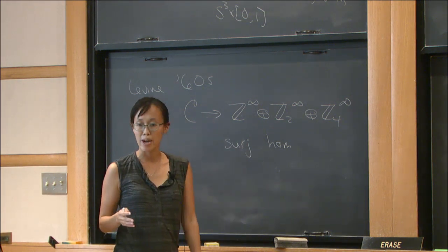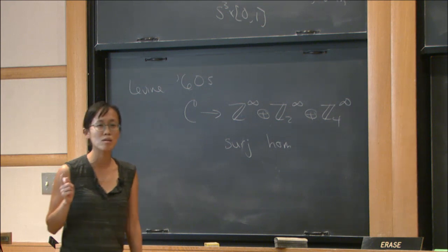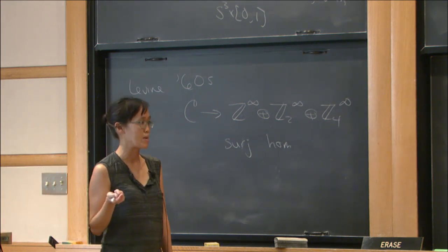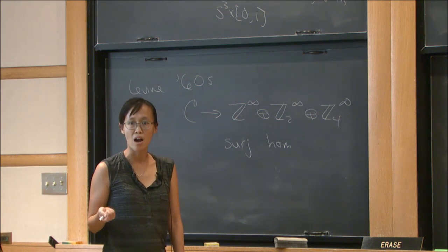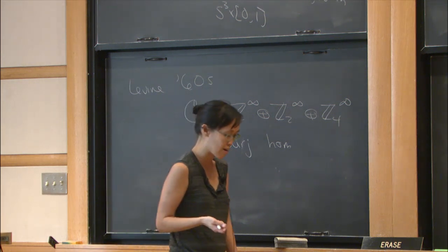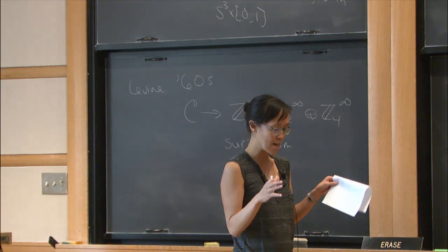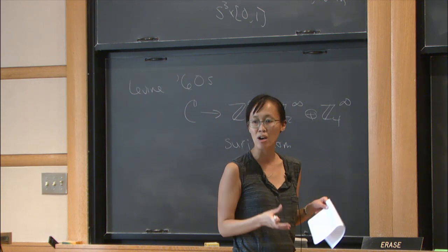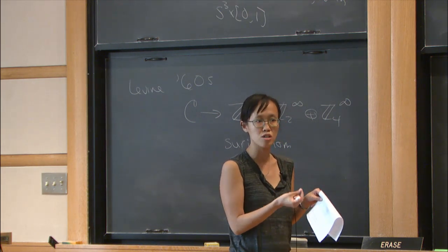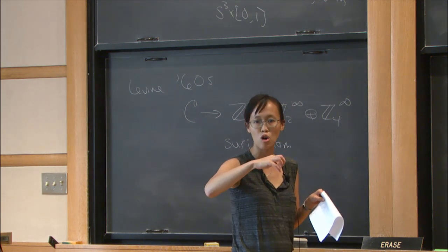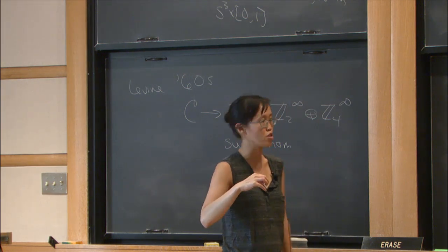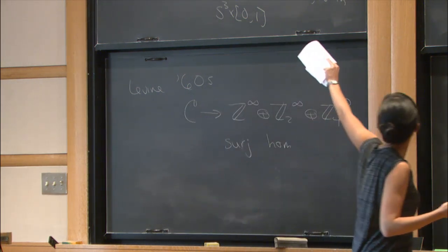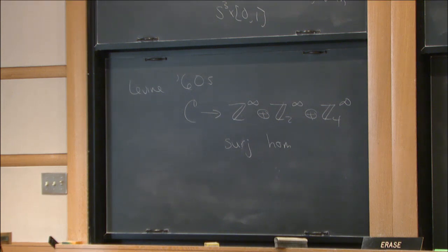That's going a little too far, because then every knot is going to be concordant to the unknot. How can you see that? Well, take a knot in S³. If you take the cone on that knot, it bounds a topological disc. Then you'll just puncture the cone somewhere—that's going to be a topological cylinder.